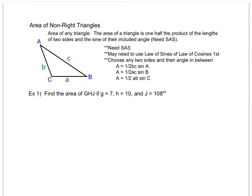Up until now, we've only been able to find the area of either a right triangle or a non-right triangle whose altitude we know. But now we're going to look at a way to find the area of a triangle regardless of whether we know the altitude or not. We can find the area of any triangle by taking one half times two side lengths times the sine of their included angle.